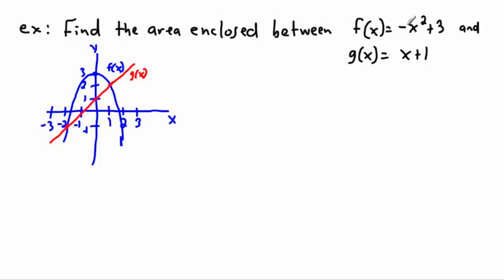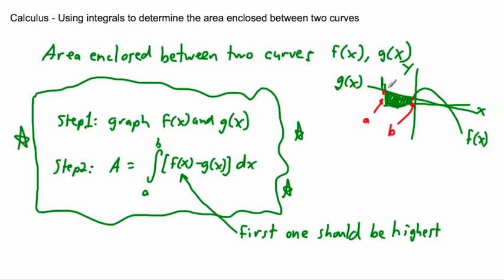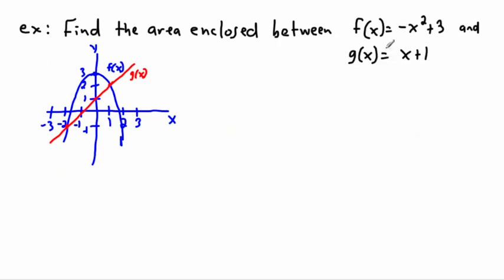Notice I didn't tell you the bounds — you didn't know where a and b were. In this problem, there's only one enclosed region where the two curves have crossed — here and here is where they've met. So the area enclosed between them is going to be this region right here. That means I need to find those intersection x-values.